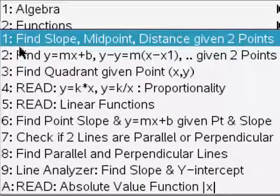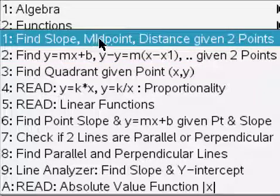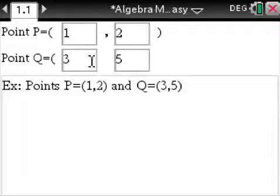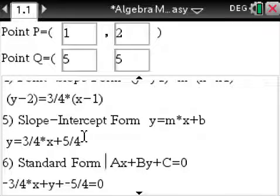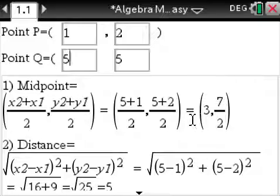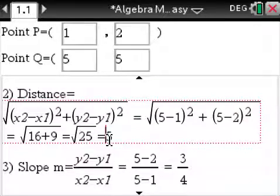Points and Lines, Find Slope, Midpoint, Distance, Given Two Points. You'll always have to do this. So you just plug in your two points, and midpoint, done. Distance, right there. Slope, right there.